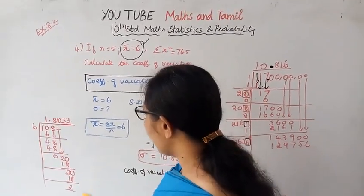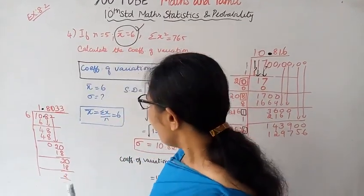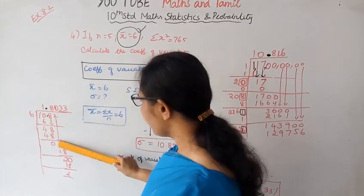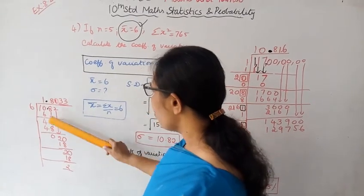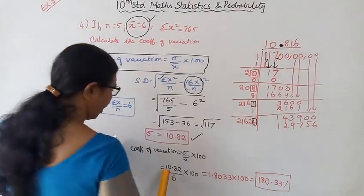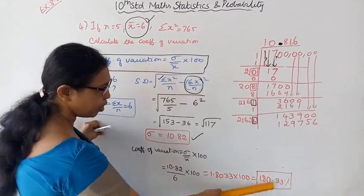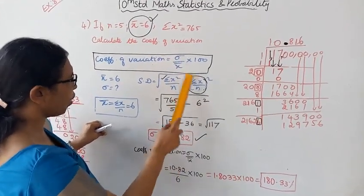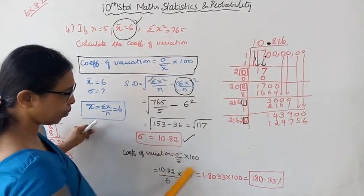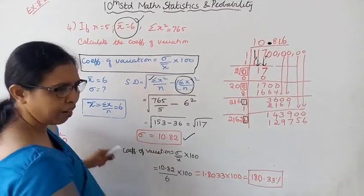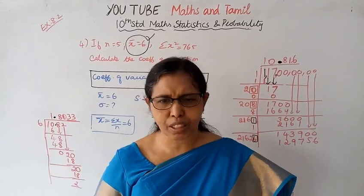Dividing 10.82 by 6 gives approximately 1.8033. Multiplying by 100 gives 180.33 percent. Therefore, the coefficient of variation is approximately 180.33%. Students, this channel helps you get good marks — please like and subscribe to the videos.